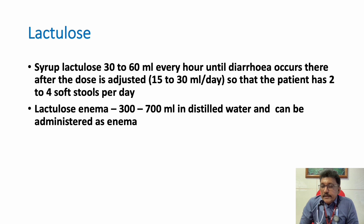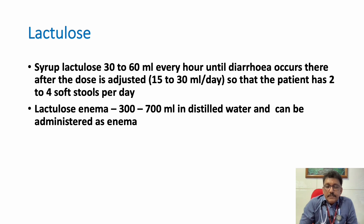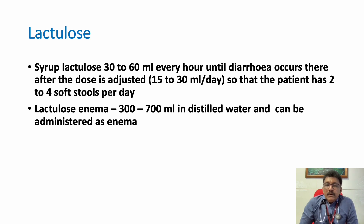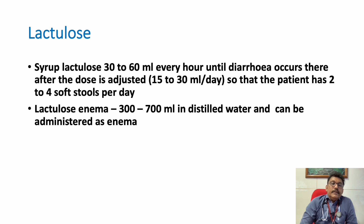Lactulose is one drug that reduces the pH of the intestine, reduces bacterial growth, and thereby reduces ammonia production by bacteria in the intestine. It can be given orally or as a lactulose retention enema — both can be tried in patients with hepatic encephalopathy.